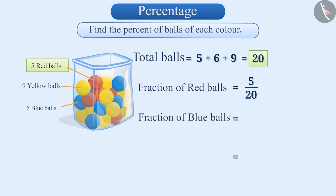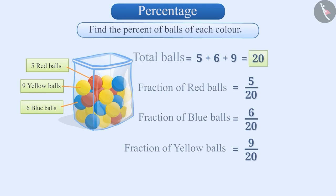Similarly, can you tell me how you will represent the total number of blue and yellow balls in the fraction? Think about it. Absolutely right. 6 out of 20 are blue balls, so it can be written as 6 by 20, and 9 out of 20 are yellow balls and can be written in the form of fraction 9 by 20.